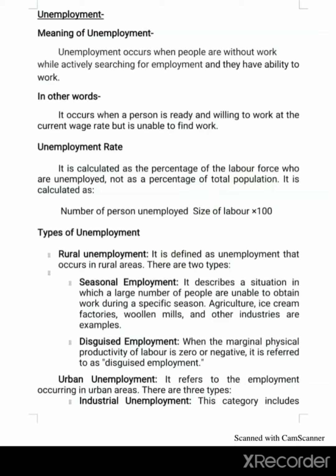Seasonal unemployment describes a situation where a large number of people are unable to obtain work during a specified season. For example, in agriculture, workers are busy during the monsoon season but idle the rest of the time. Ice cream factories and woolen mills are other examples of seasonal employment.